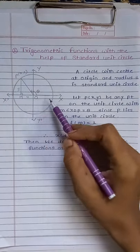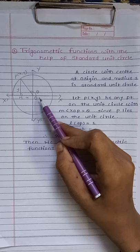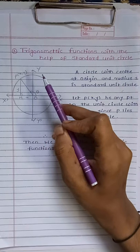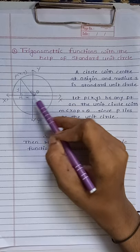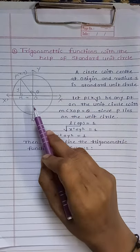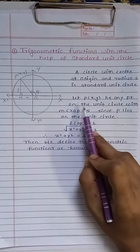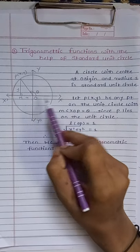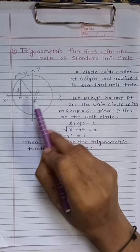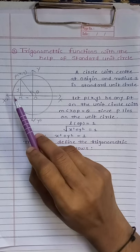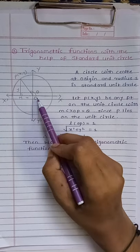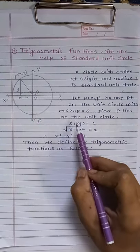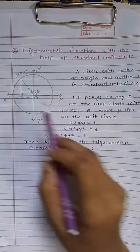Now, consider the unit circle having center O and radius 1. Always the unit circle has radius 1. Then that circle is known as a standard unit circle. Let P of XY be any point on this unit circle with major angle XOP equal to theta. Since P lies on this unit circle, the length of OP is 1 — that is, the radius of this unit circle.